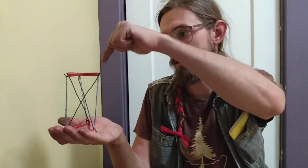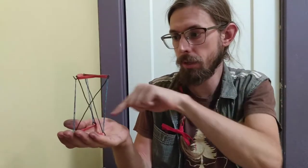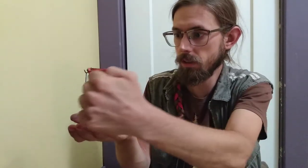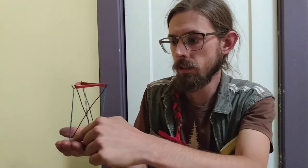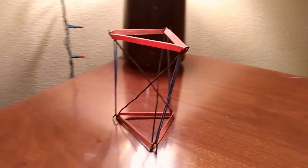This is a pretty simple tensegrity structure. It's made of rubber bands at the top and bottom and going vertically at the corners here, and then it's got these three steel wires diagonally on the interior.